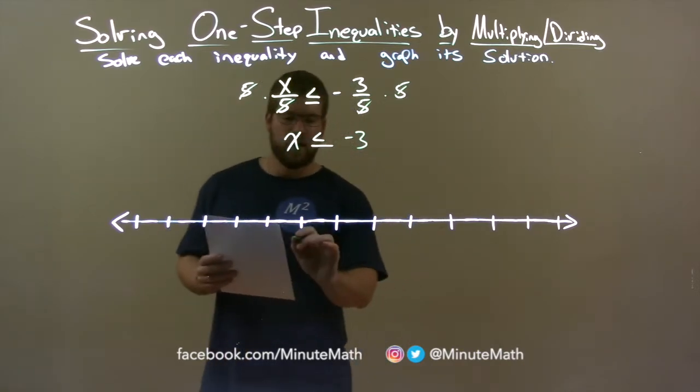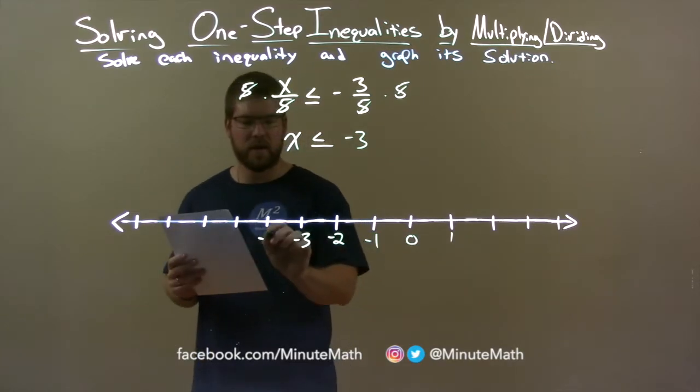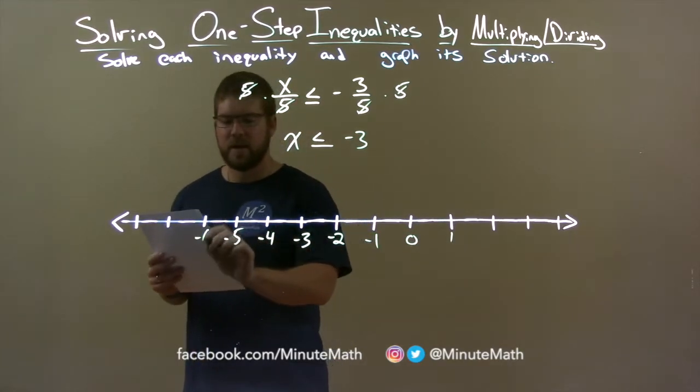So now let's graph it. Negative three here, negative two, negative one, zero, one, and negative four, negative five, negative six.